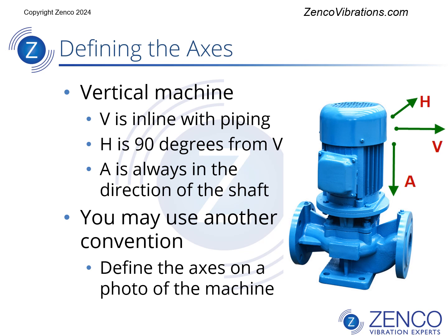Defining axes in a vertical machine gets a little tricky because axial is always with the shaft, and in this case axial is also vertical. So we need to define vertical a different way. A common way to do this is to consider vertical to be in line with a discharge pipe, and horizontal would be 90 degrees from vertical. You can use a different convention — just either draw a picture or take a photo, label the axes on it, and make it clear to everyone how you're defining vertical and horizontal.